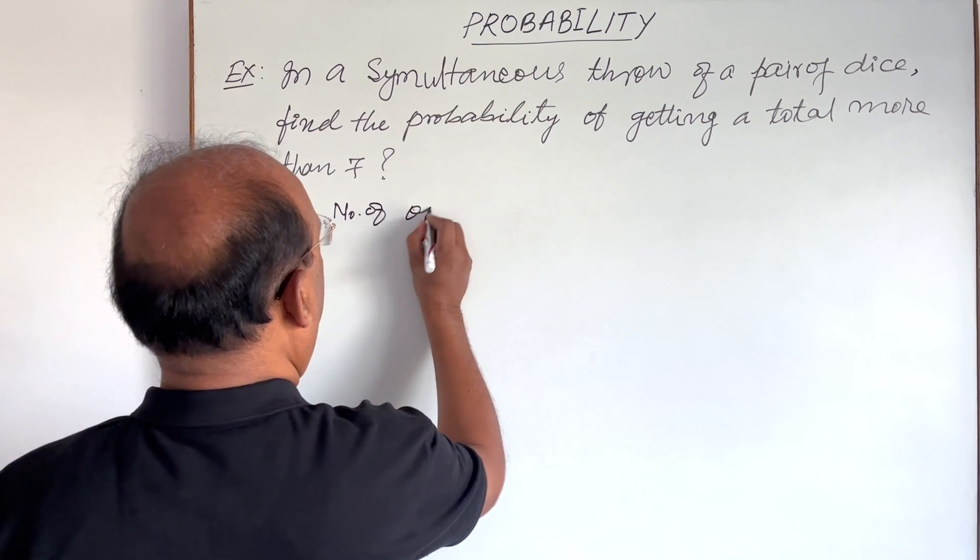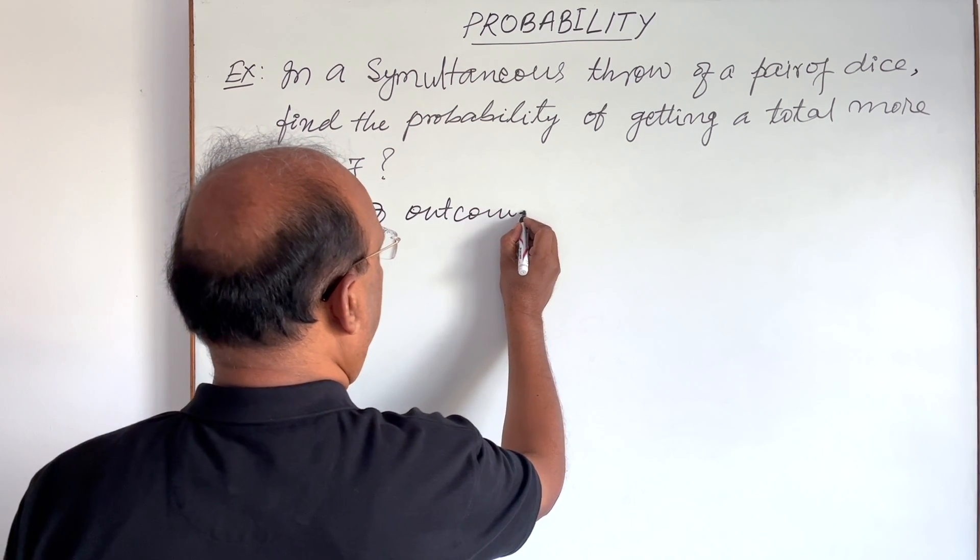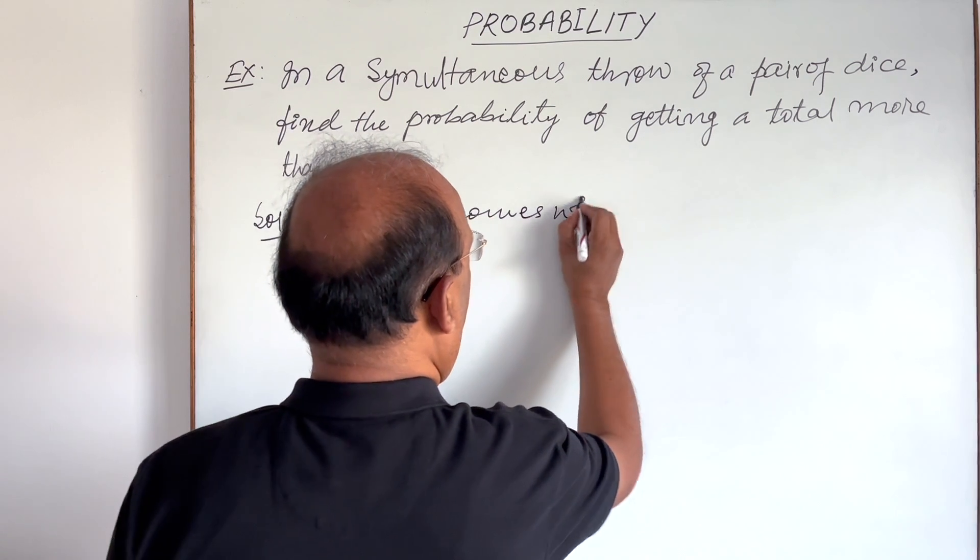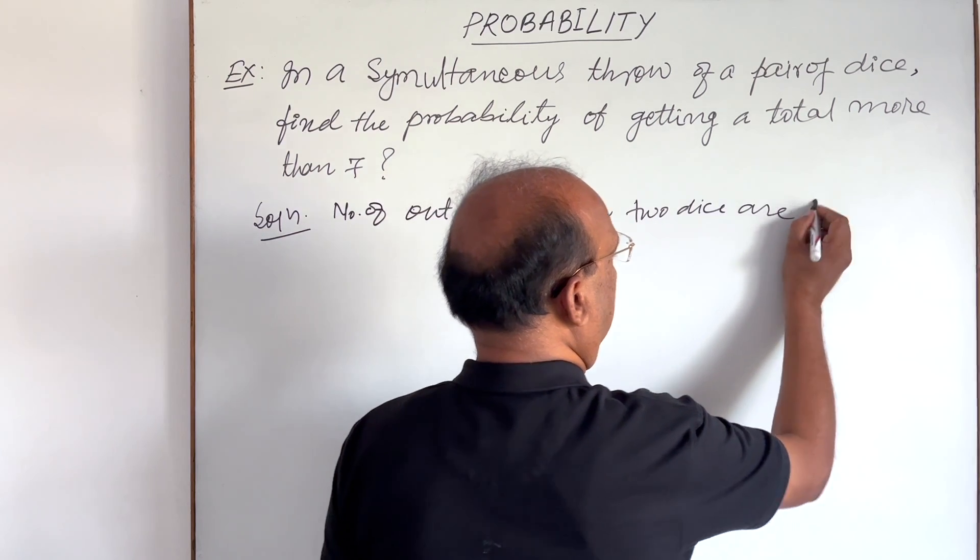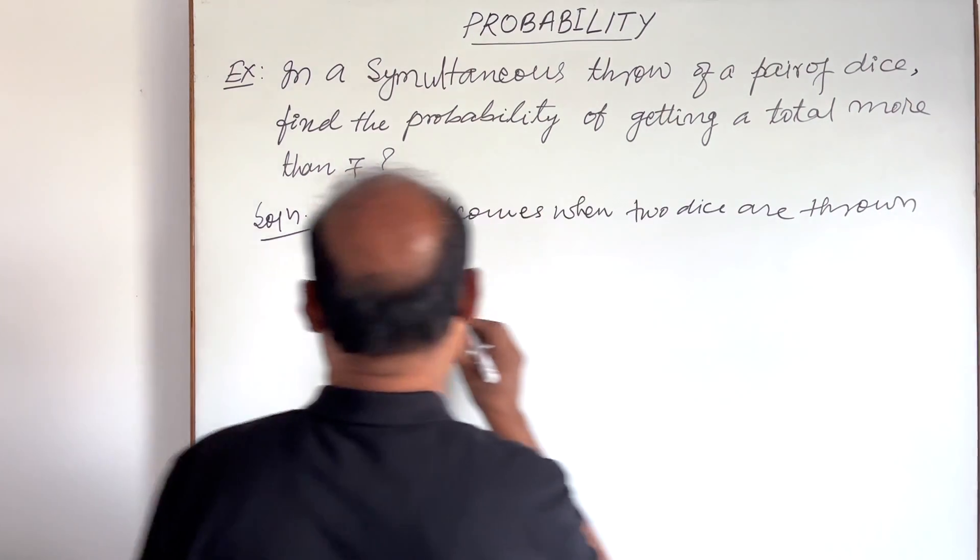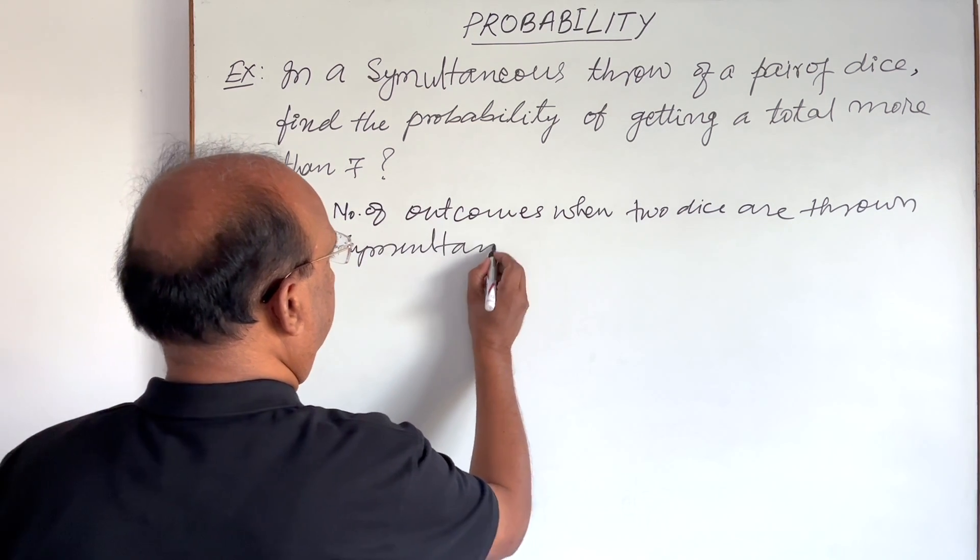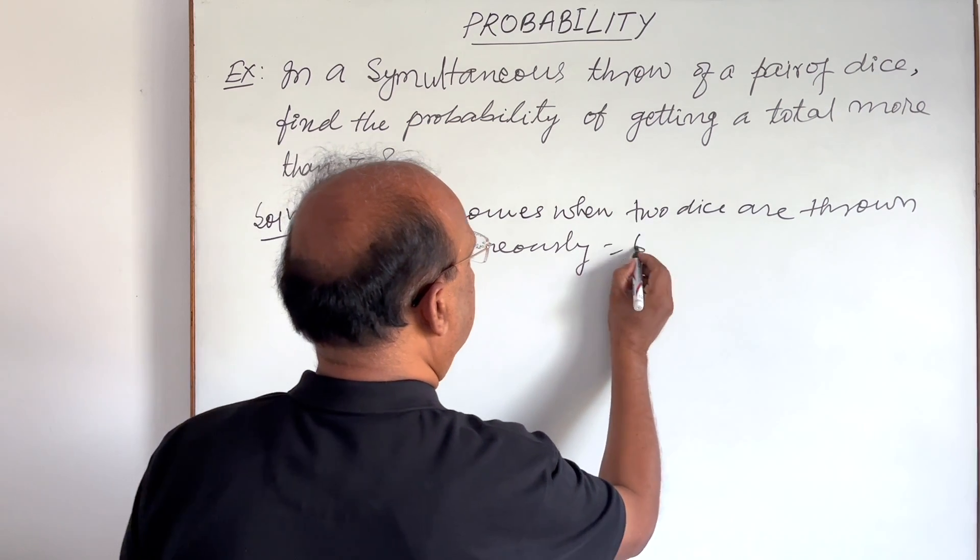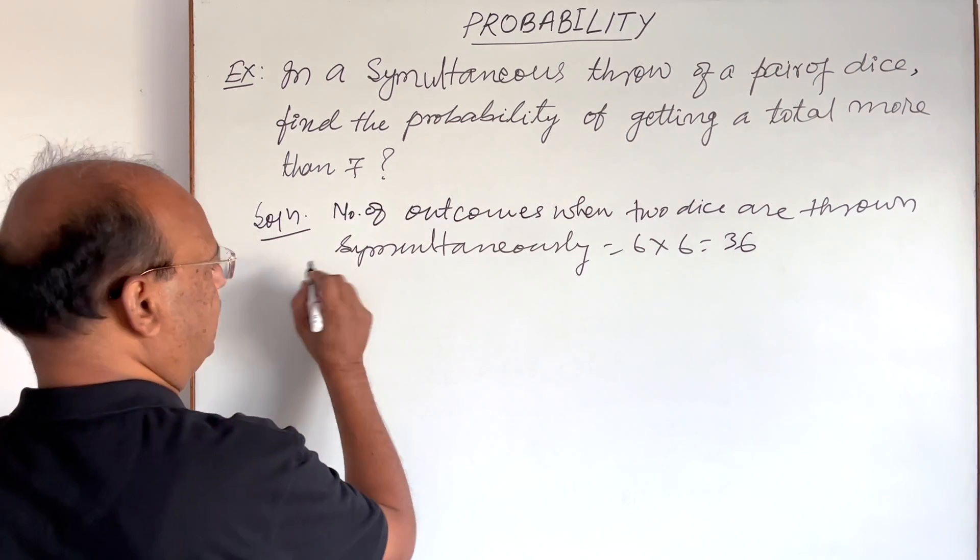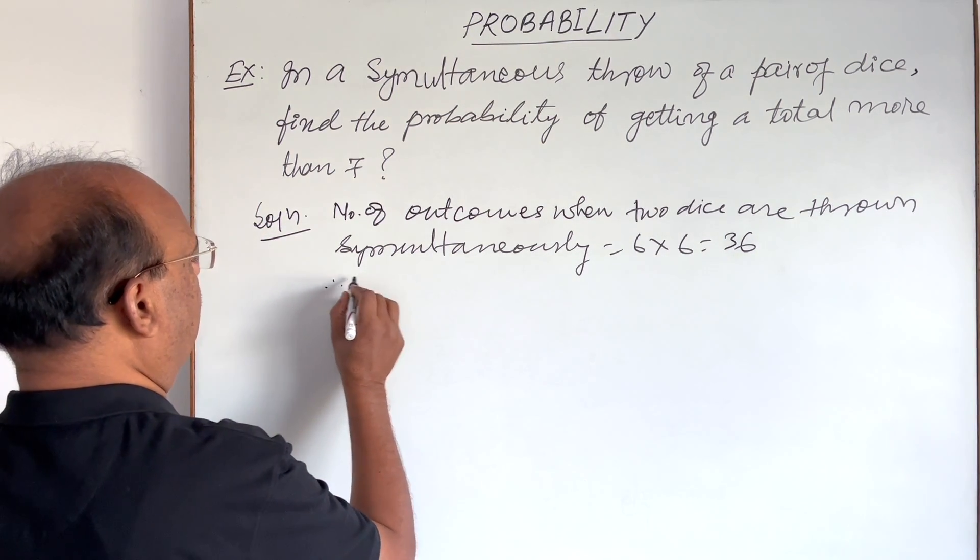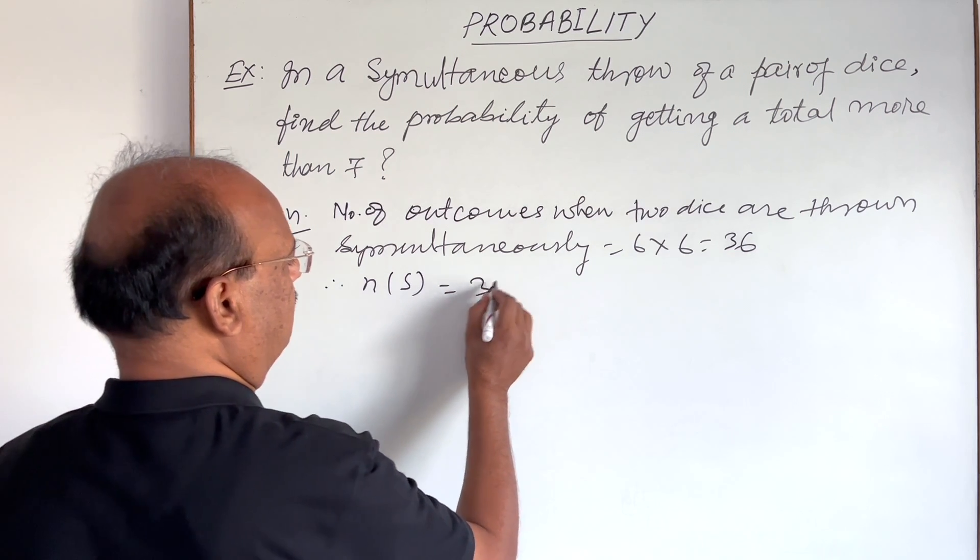Number of all possible outcomes: number of outcomes when two dice are thrown simultaneously is six into six, 36. So that is sample space. Therefore, the number of possible outcomes in this sample space is 36.